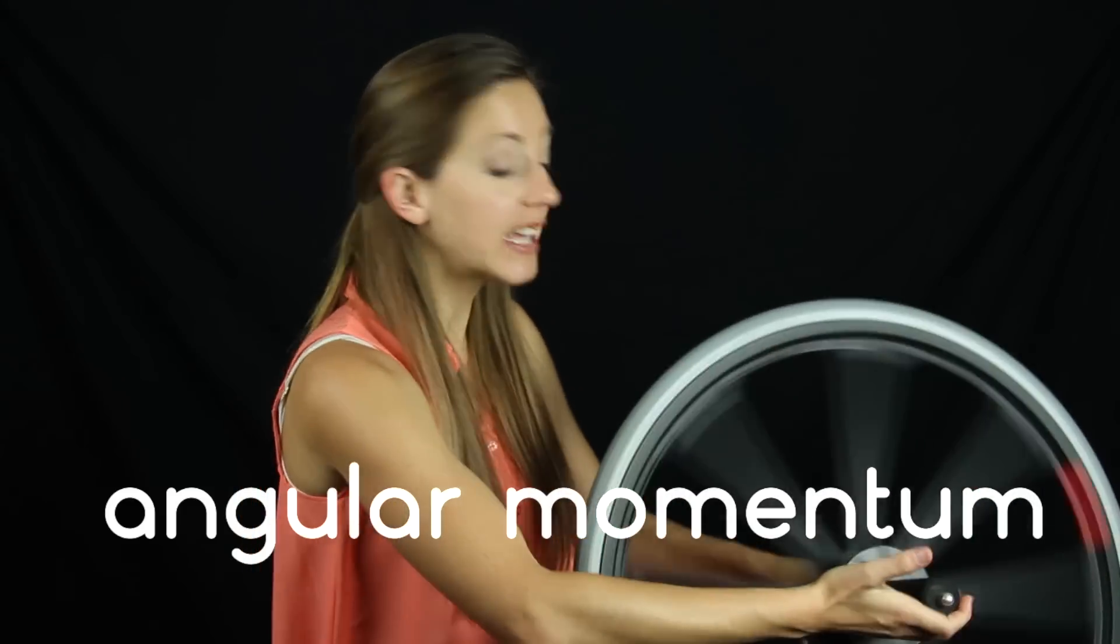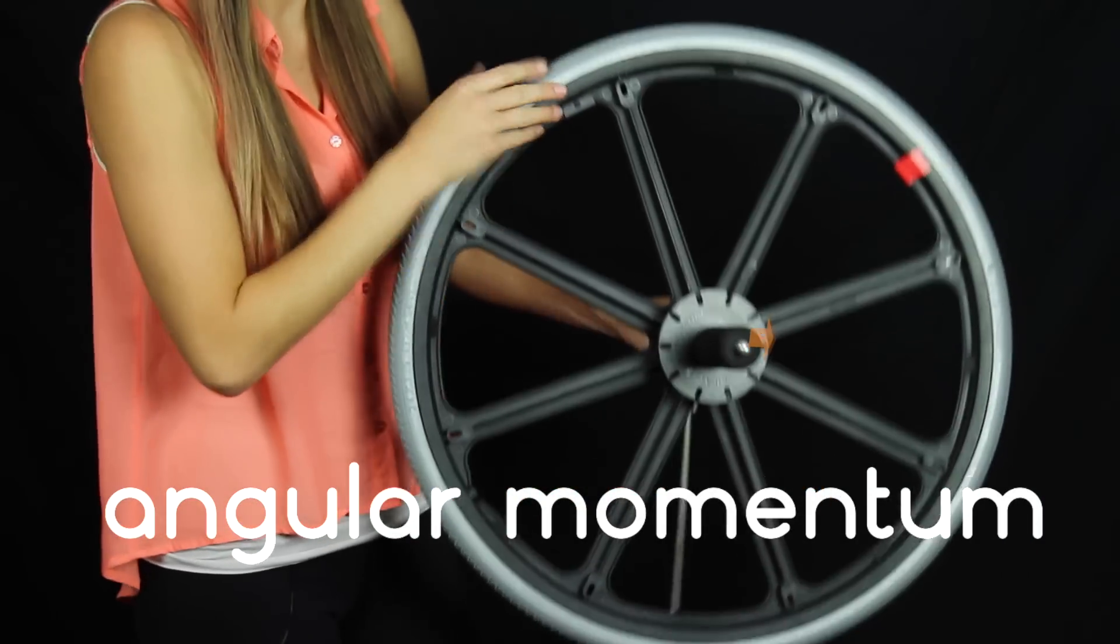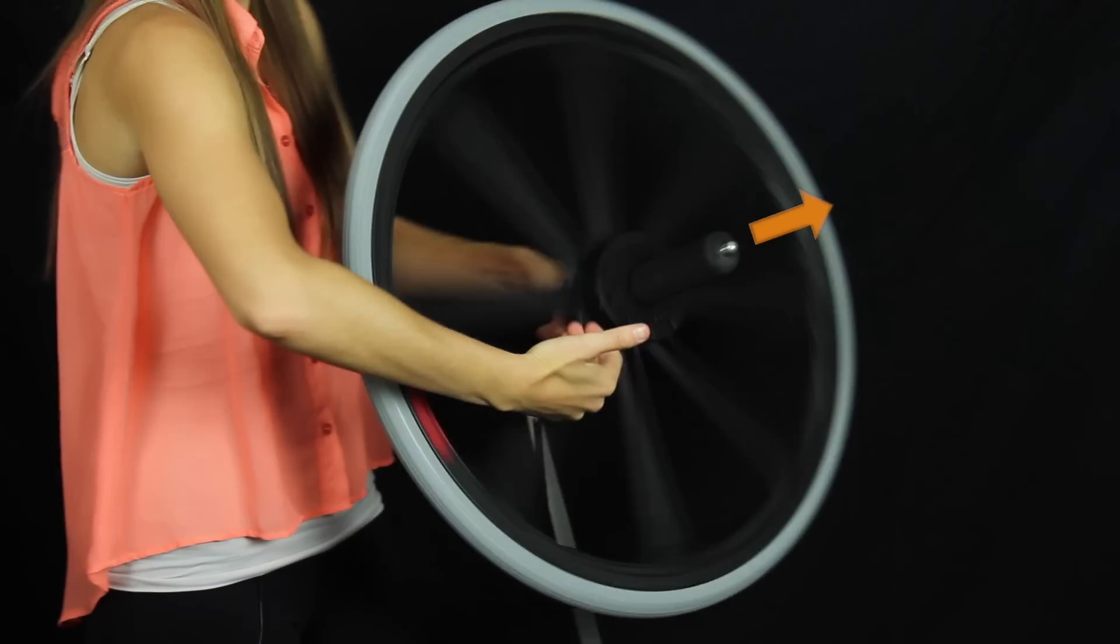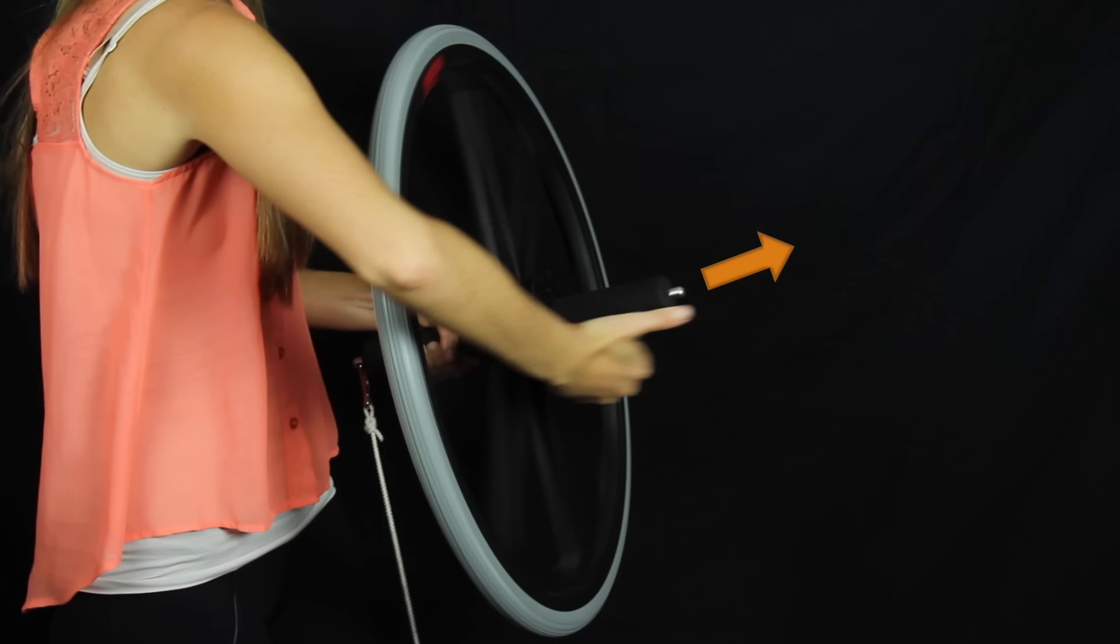When something rotates, it has angular momentum, which physicists like to define with the right-hand rule, as along the axis it's rotating about. Curl your fingers with the direction of the spin, and your thumb points along the angular momentum vector.